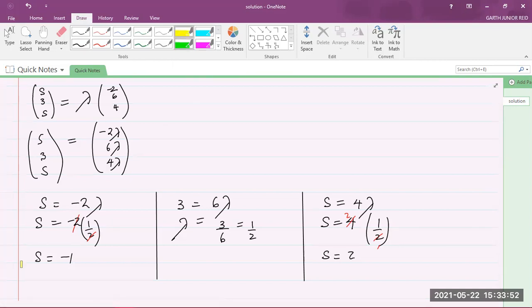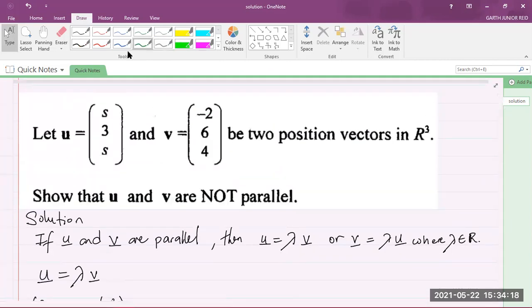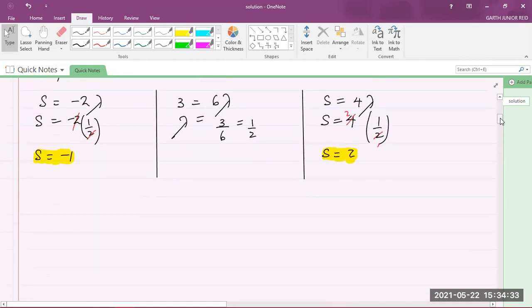Now, what do you notice here? We see that in the first equation, we are calculating S to be negative 1, and in the third equation, we are calculating S to be 2. Let's go back to the question. Remember, this is where S is coming from. The values of S must be the same in order for it to be parallel. But you can see that the values of S are different. So we can now write a statement and say that since the values of S here are different, it means that the vectors U and V are not parallel.